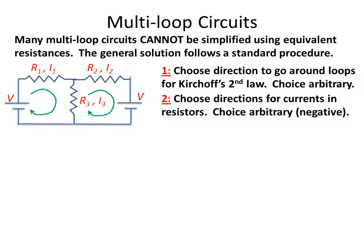The second step is to choose directions for the currents in the resistors. Again, the choice is arbitrary, and if you get them wrong, you'll just end up with a negative current, which means you put the arrows in the wrong direction. You can draw the arrows in any direction you like. You just have to make sure you're consistent when you create the equations out of these choices.